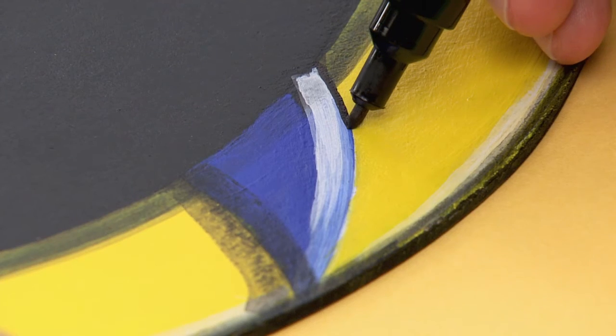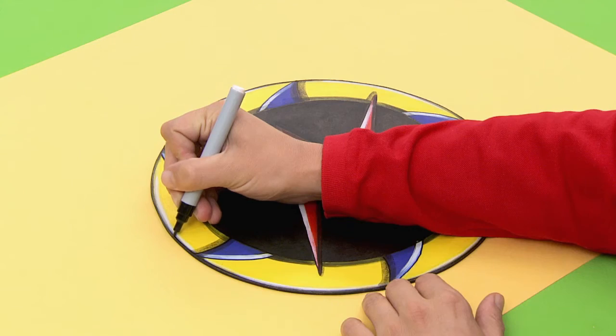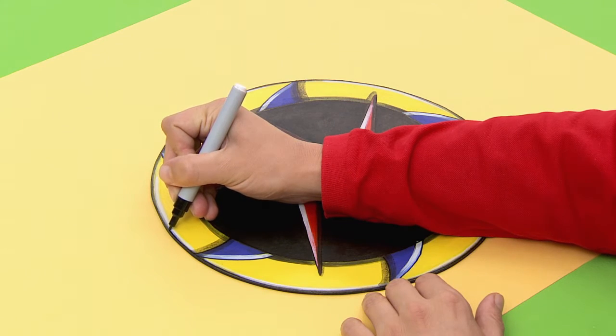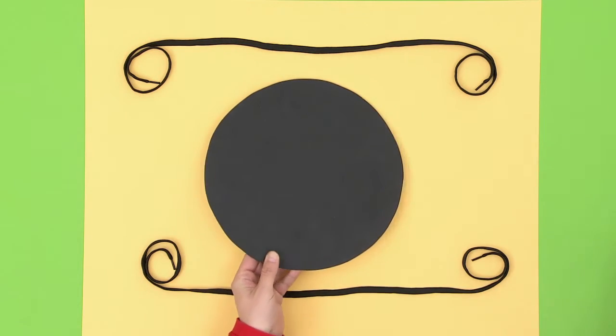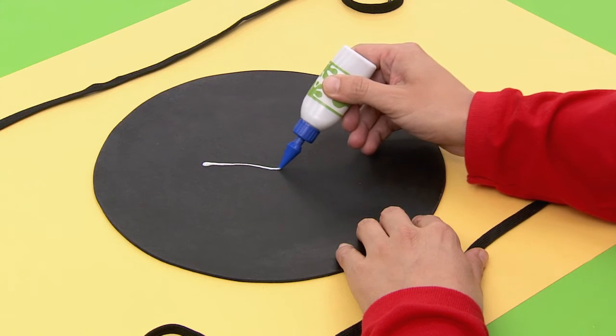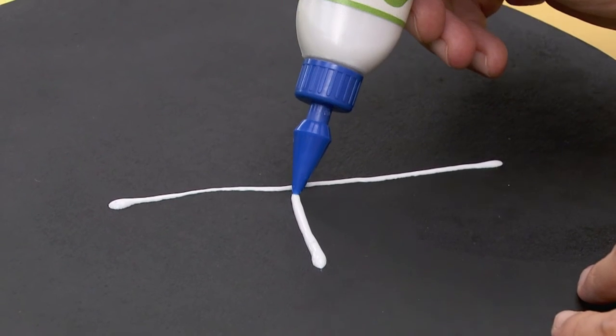Finally, outline all the shapes with a black marker. Put the laces on so you can hang it onto your chest. Spread some glue behind it and stick one lace in the middle.